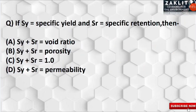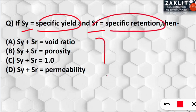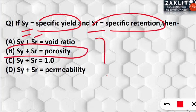The next question: if Sy denotes specific yield and Sr denotes specific retention, which formula is correct? The correct option is B: specific yield (Sy) plus specific retention (Sr) equals the porosity of the soil or rock. This is an important relationship — kindly note it down.